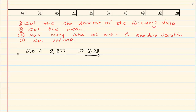The next question says calculate the mean. Using the same information, press AC then Shift 1. Go to number 4 which is variance and press number 2. The answer for the mean is 36.7.